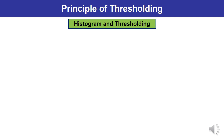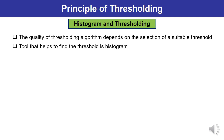Now let us discuss histograms and thresholding — both of these terms are very much related. The quality of a thresholding algorithm depends upon the selection of a suitable threshold value T, and the tool which is helpful in determining this threshold is the histogram. So the histogram is the tool which is helpful in selecting a threshold value, and this is how histogram and thresholding are related to each other.